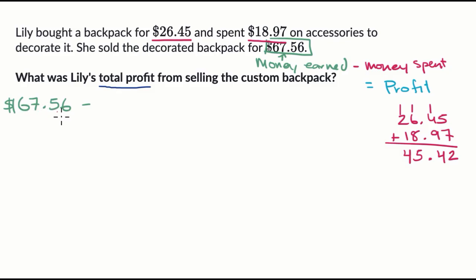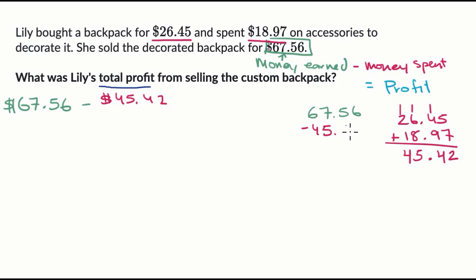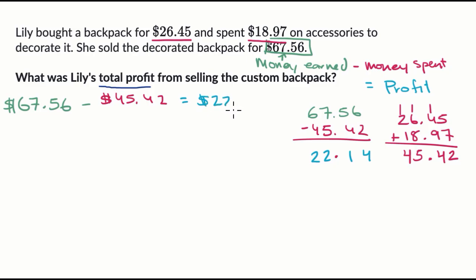Money earned minus money spent: $67.56 minus $45.42. Six minus two is four; five minus four is one; seven minus five is two; six minus four is two. So we get a profit of $22.14.